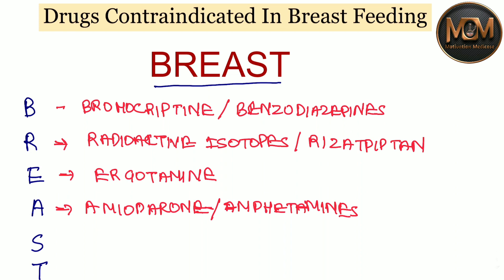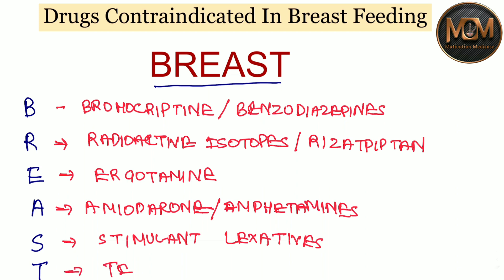From S, we have Stimulant laxatives. And the last one, from T, we have Tetracyclines, or Tretinoin. So these are the drugs that are contraindicated in breastfeeding.